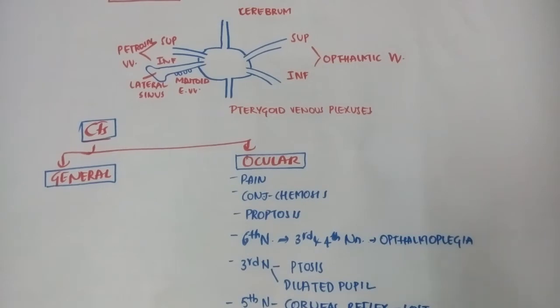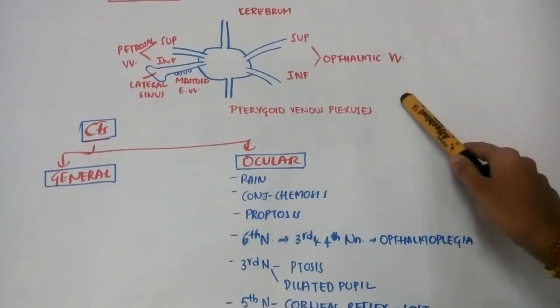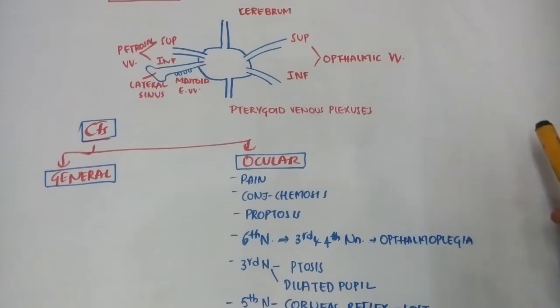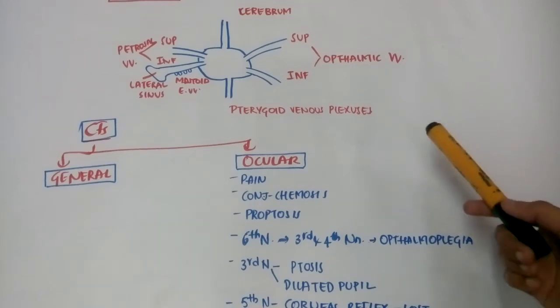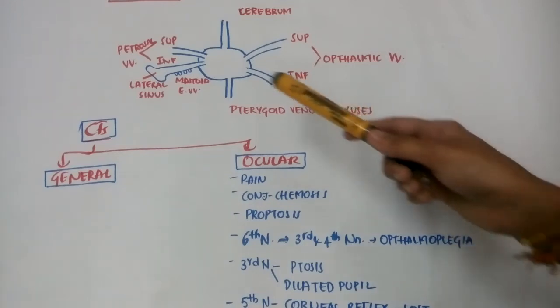Anteriorly, it communicates with the face through superior and inferior ophthalmic veins, receiving blood from the face, nose, paranasal sinuses, and orbit. Infection may spread from all these regions. Posteriorly, it communicates with...